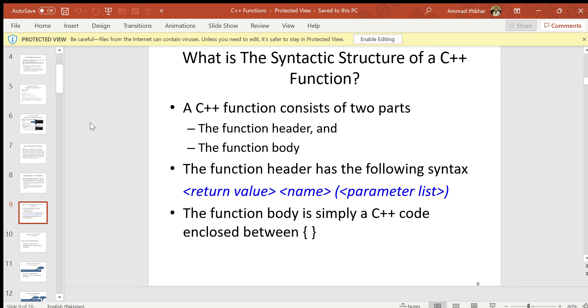What are the main parts of a C++ function? It has a function header and a function body. The function header includes the return value, the name, and the parameter list.